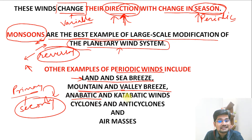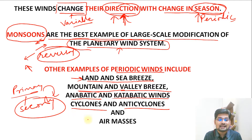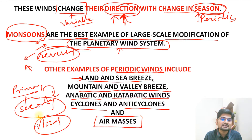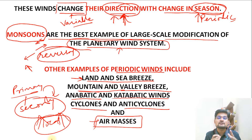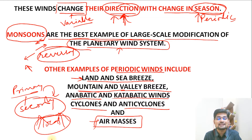Then we have anabatic and katabatic winds. We'll discuss what these are. Then we have cyclones and anticyclones — one where we have centripetal action with winds moving toward the center, and one where the wind moves away from the center. And then we have air masses — localized air of particular locations with regional characteristics. These secondary winds are not of an entire planetary character; they are of a variable, dynamic nature — that is why they are called periodic, seasonal, or variable winds.